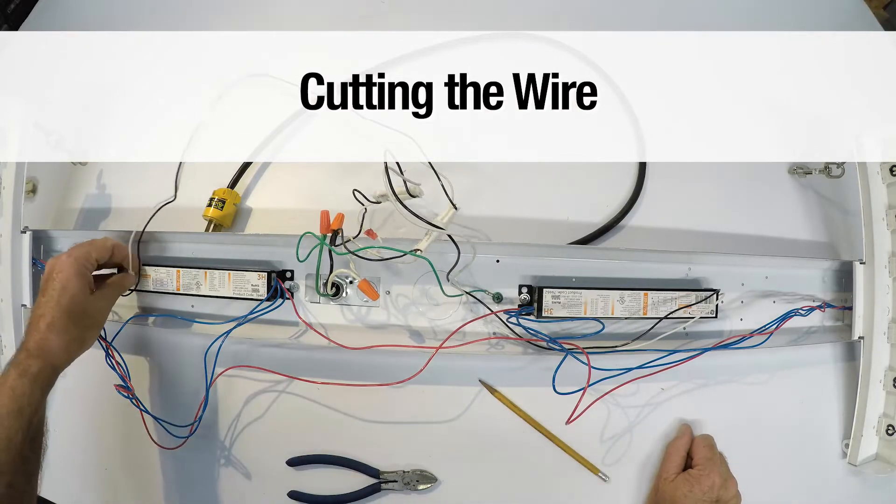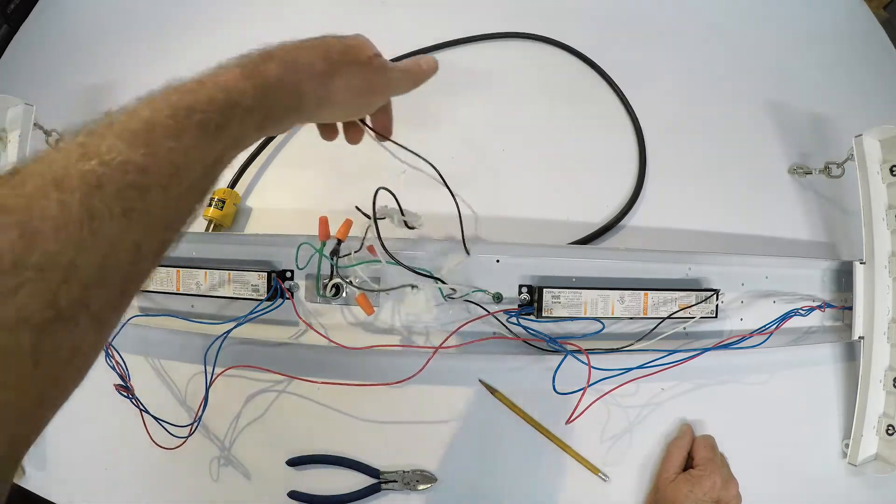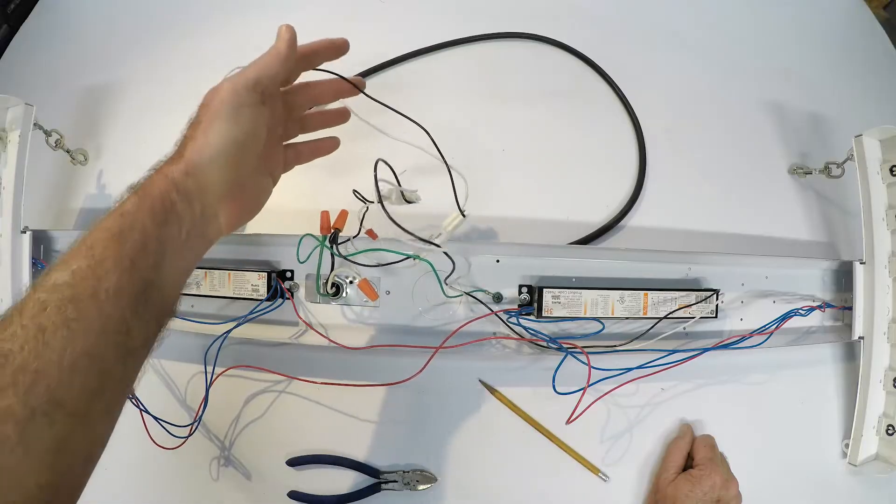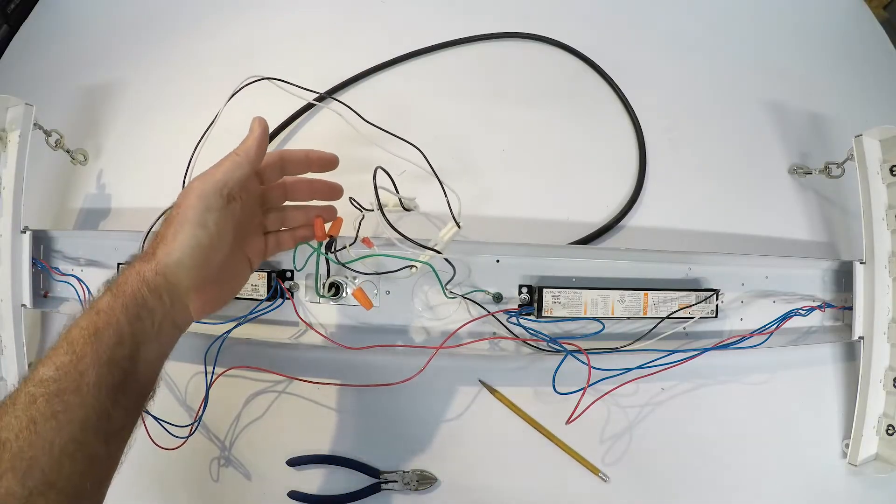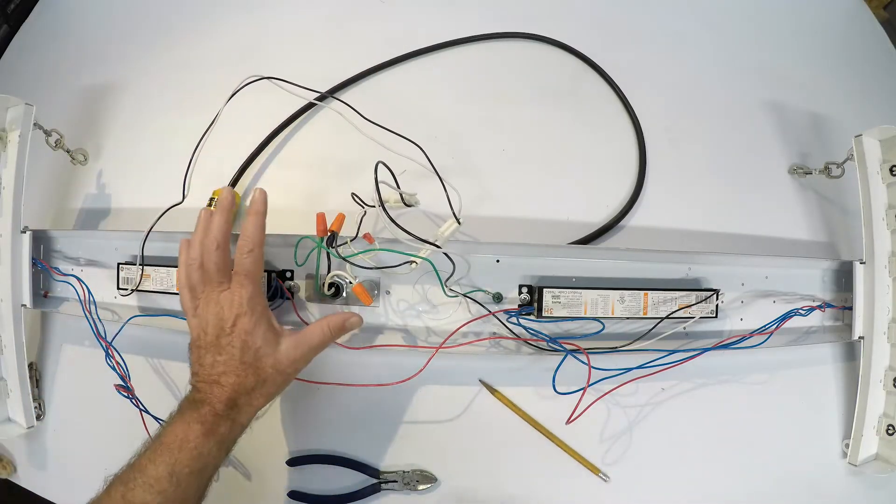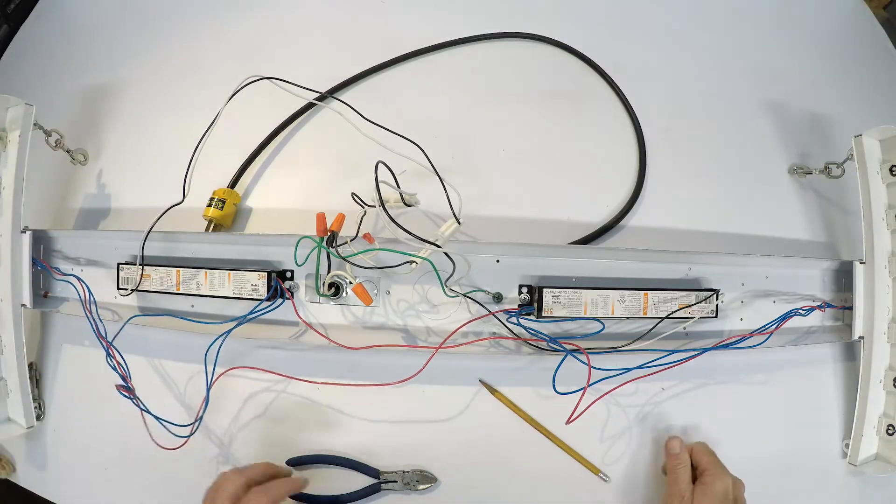Now this is an important step to cutting the wires. You might want to try just disconnecting here and taking this ballast out which would be a safe thing for you to do because you can always go back and retrieve those wires.